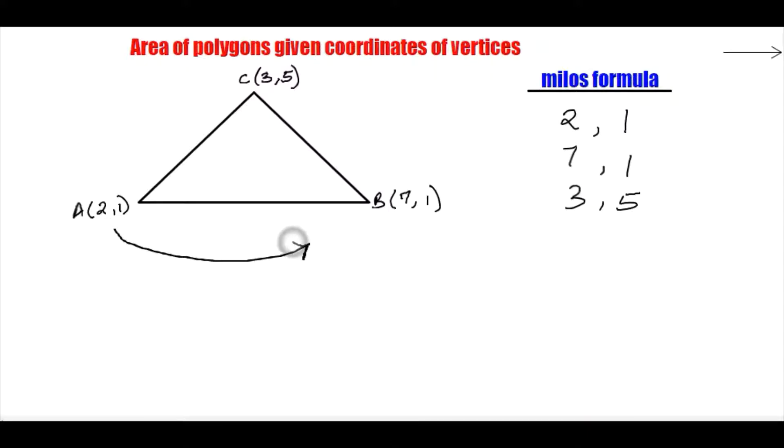And make sure you're consistent with that direction. Don't skip a point. For instance, you see now I was moving in the anticlockwise direction, so I will be going around my figure in that kind of manner. So once I reach the last coordinate point or the last vertex, that is C of 3, 5, then I will repeat the coordinates of the first point.